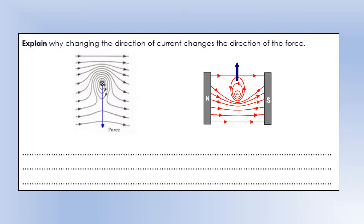Why does changing the direction of the current change the direction of the force? We can explain it using the superposition of field lines. On the left, a current going into the page — the X shows the cross-section — results in a force downwards. On the right, a current is coming out of the page.